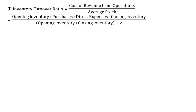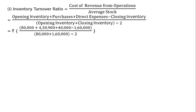The cost of revenue from operations will be found out using the formula: opening inventory plus purchases plus direct expenses minus closing inventory, whole divided by opening inventory plus closing inventory whole divided by 2. That is equal to rupees 80,000 plus purchases 4,30,900 plus direct expenses 40,000 minus closing inventory rupees 1,60,000, whole divided.